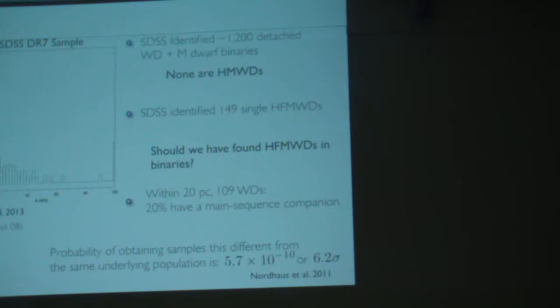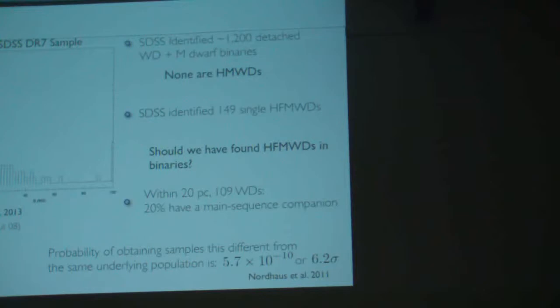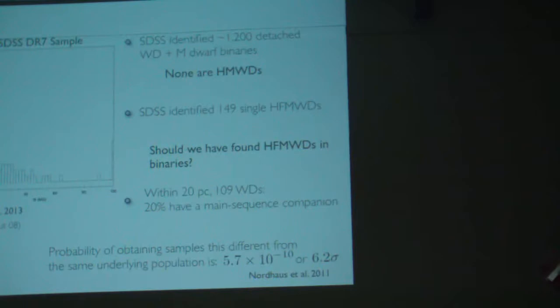You can do the statistics and ask the question, how are these coming from the same underlying population? If you calculate the maximum probability for that using binomial statistics, you get 5.7 times 10^-10, or a 6.27 sigma result that they're coming from separate populations.